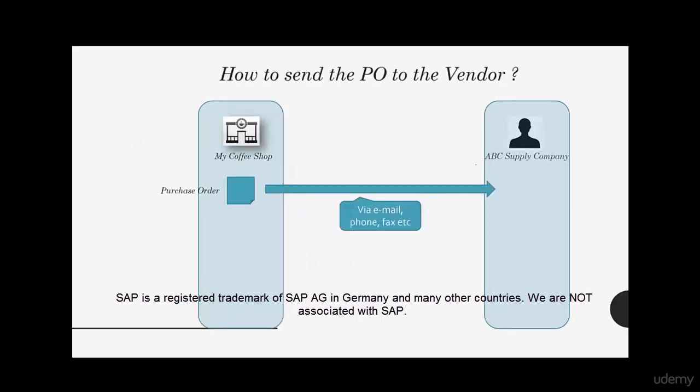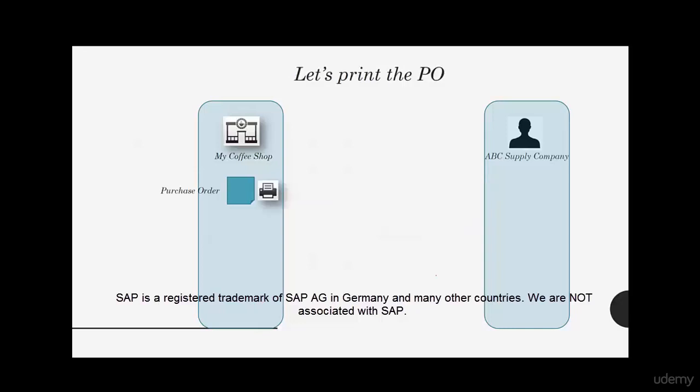You can't just send the order number — the vendor wouldn't know heads or tails of it. The order also needs to have the line items: what was ordered, in what quantity, the price, and many other details. You could take a PDF and use email, use a phone to call the vendor and give the order details, or even fax it. There are different ways to send this to the vendor.